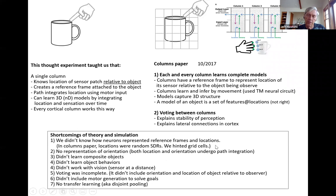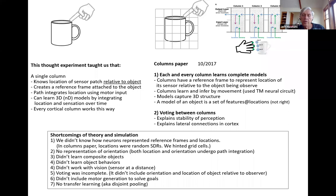We also never even considered initially the problem of orientation of the sensor. When you touch a cup, what you feel depends on the orientation of the finger — it's not just the location. You can rotate your finger around that point and feel different things, and we can predict that. So there's a concept of orientation of the sensor that also has to go under path integration, and you need to know the orientation of the sensor to make predictions. We didn't have that anywhere in the paper — that was a big hole.